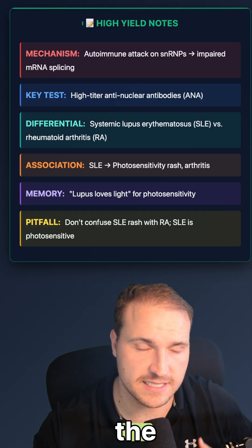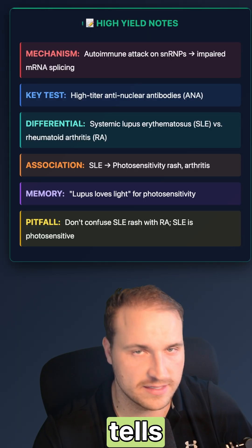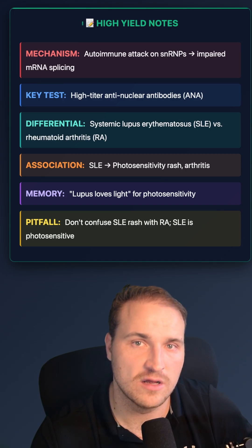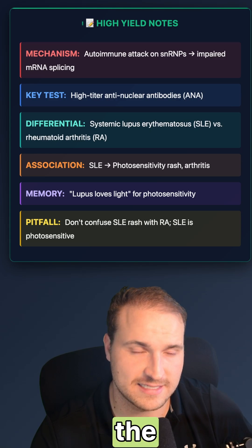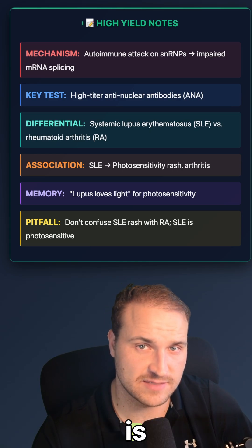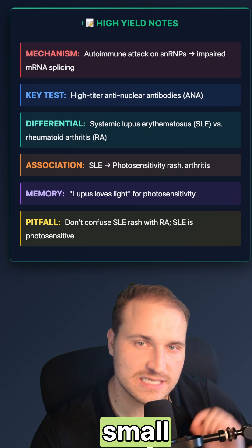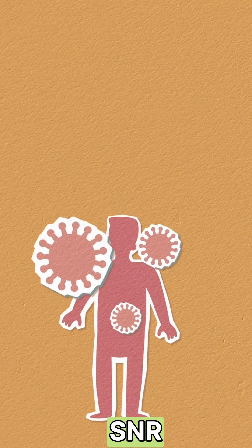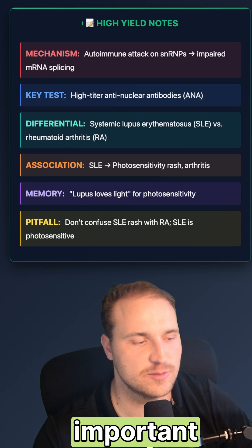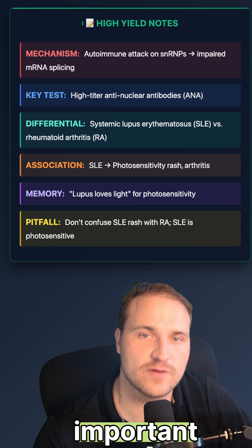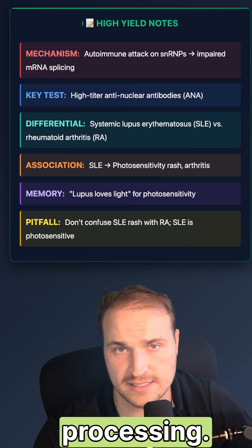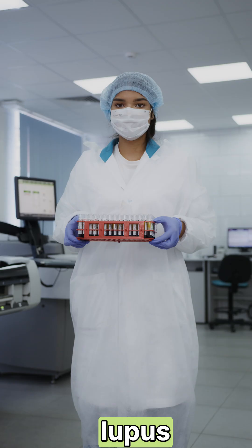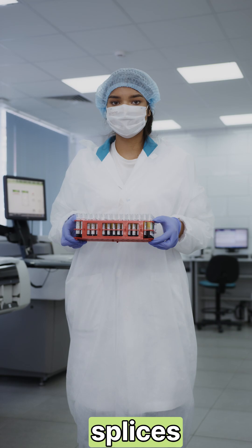That photosensitive rash, the fatigue, the arthritis, and the ANA all tell us lupus, especially those antibodies against the proteins associated with the small nuclear RNA. That's the anti-Sm antibodies, which is highly specific for SLE. The small nuclear ribonucleoproteins — the SNRNPs — are super important for mRNA splicing and post-transcriptional processing. So for this one, we have to know that the anti-Sm antibodies in lupus are going to target part of the spliceosome complex.